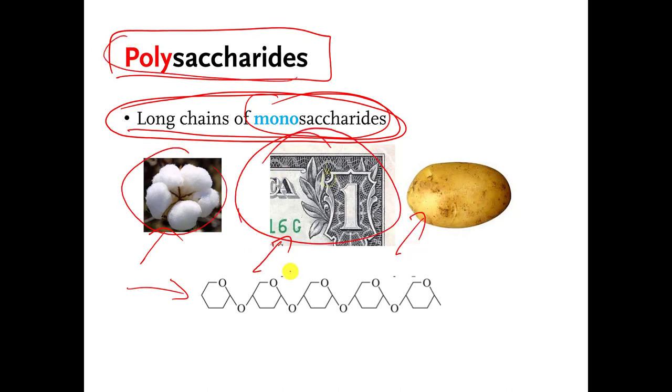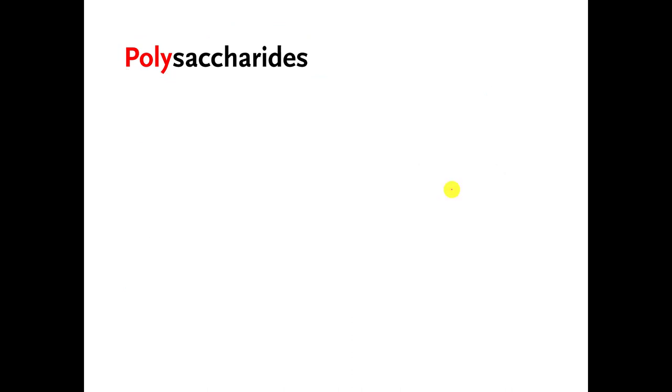So cotton. The money that U.S. paper bills are printed on is cotton, although I think they're probably going to go to plastic at some point. Stuff in potatoes is mostly polysaccharide. There is not a whole lot that I'm going to expect you to know about polysaccharides, just a couple of things.